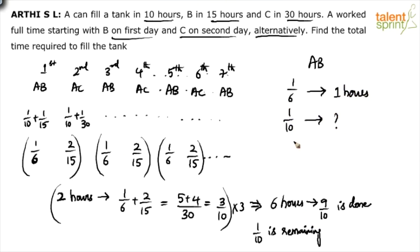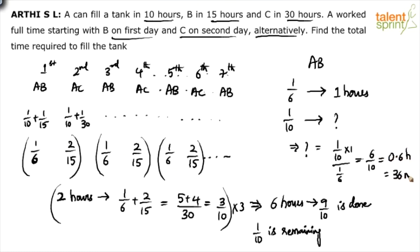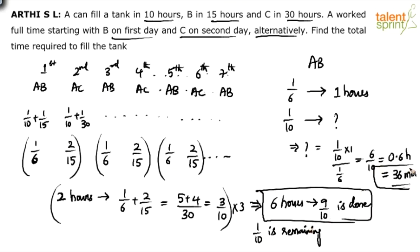Only 1/10 is remaining, so how much time will A and B take to do 1/10 of the work? Time = (1/10) ÷ (1/6) = 6/10 hours = 0.6 hours = 36 minutes. So the remaining 1/10 of the work is done in 36 minutes.